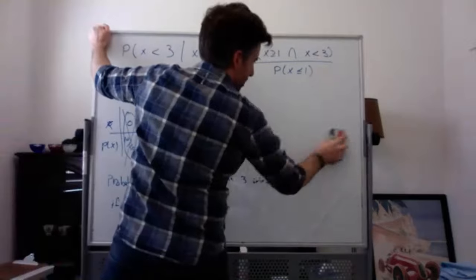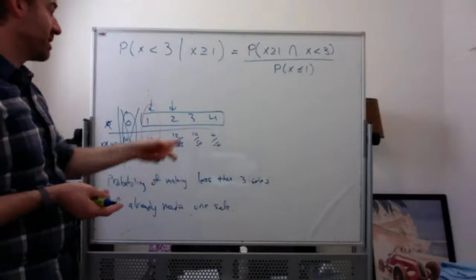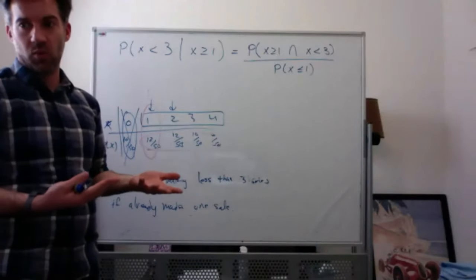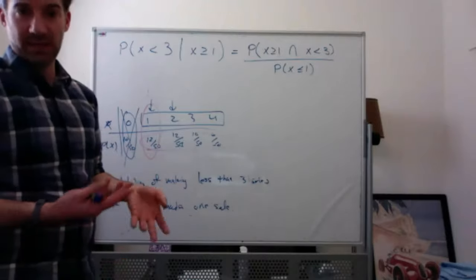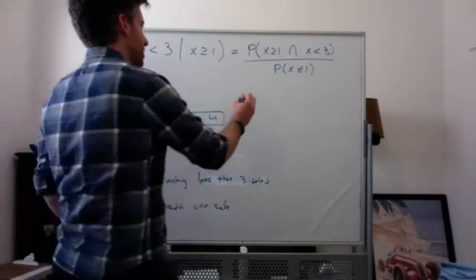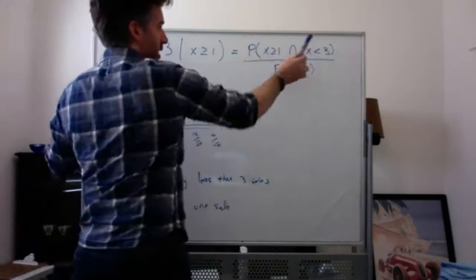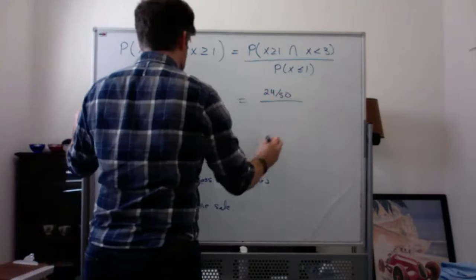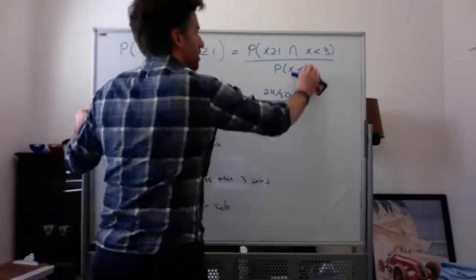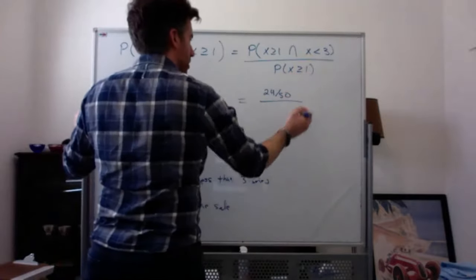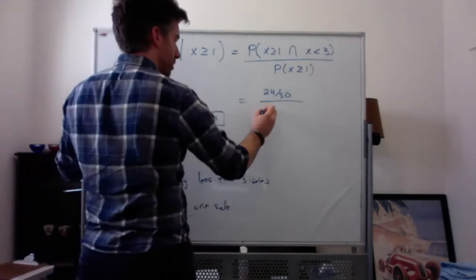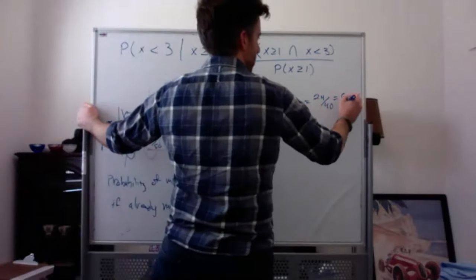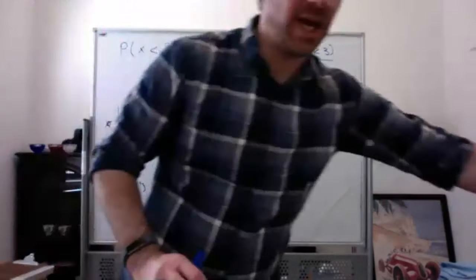Be careful: strictly less than three does not include three. So the numerator is P(X=1) + P(X=2) = 12/50 + 12/50 = 24/50, divided by P(X ≥ 1) = 40/50. That gives 24/40 = 6/10 = 3/5 = 0.6.